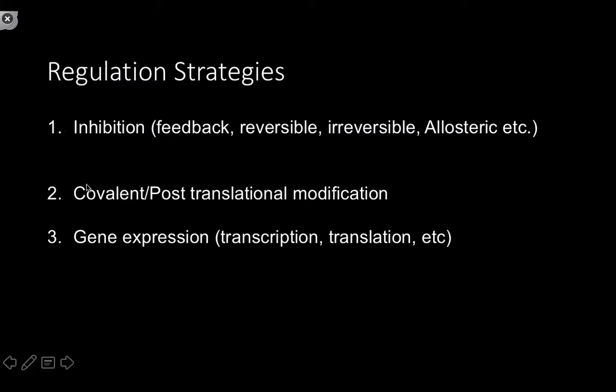There are three main mechanisms that we have to regulate enzymatic activity. The first is a classification known as inhibition. Feedback inhibition is a good example, where the end product of a pathway will actually end up inhibiting the first step in that biosynthetic pathway. The reason this is really good is that feedback inhibition enables us to reach some level of optimization very organically.